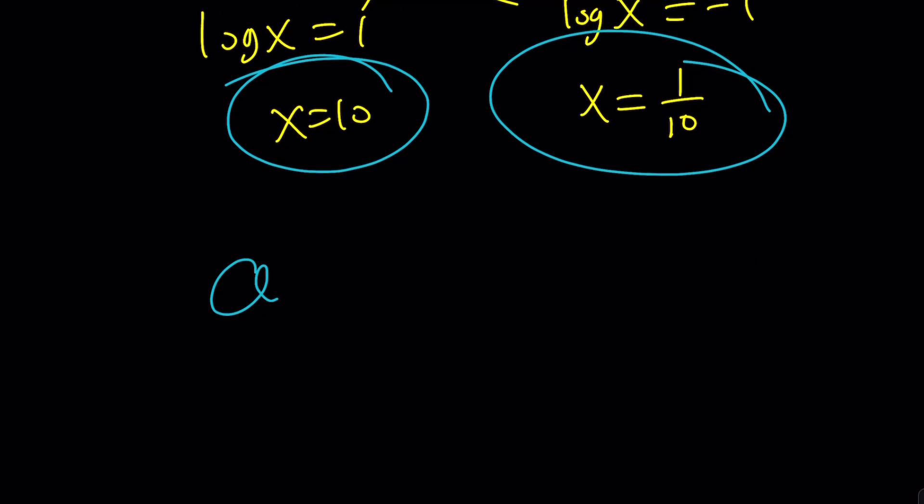Again, our famous, the property of the day is, if you have a to the power log b with base a, then the a is canceled, and you end up with b, to b or not to b. And this brings us to the end of this video.